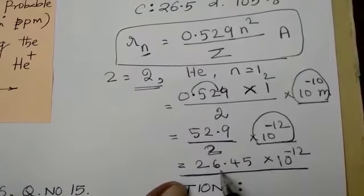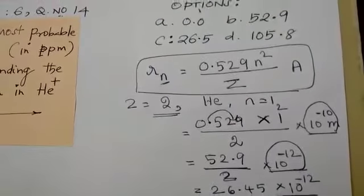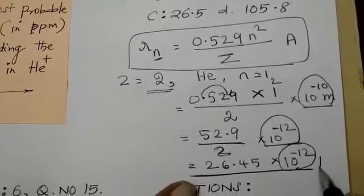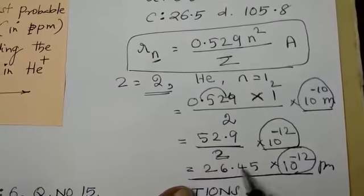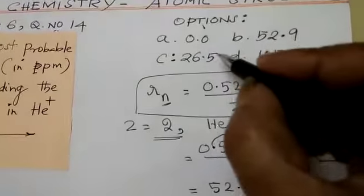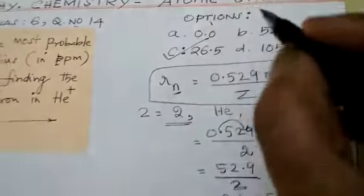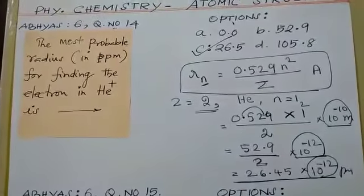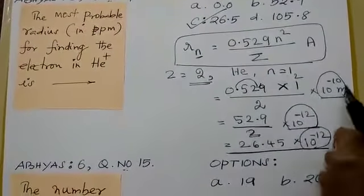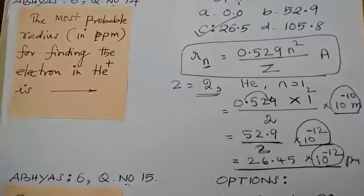The purpose is to convert the meter into picometer. Now the remaining things are very simple. 52.9 divided by 2, you are getting 26.45. 10 to the power minus 12, it is nothing but a picometer. So your answer is 26.45. This is your answer. So question is very simple. Only one trick is convert the meter into picometer. Remaining point is simple.